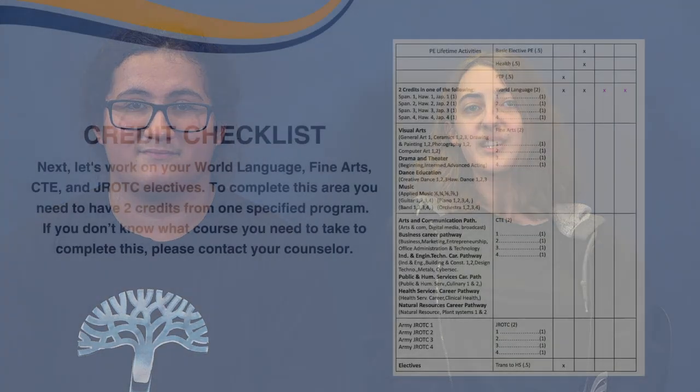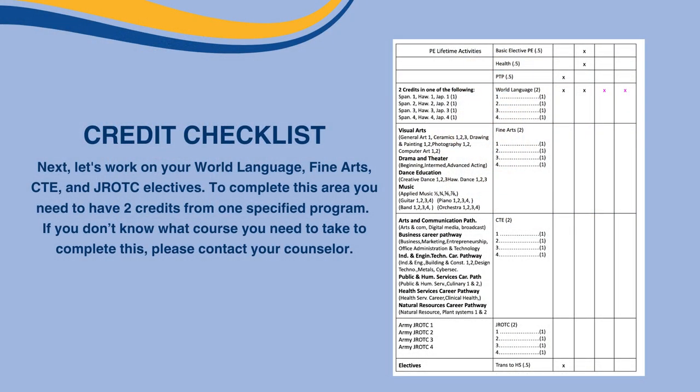Next, let's work on your world language, fine arts, CTE, and JROTC electives. To complete this area, you'll need to have two credits from one specified program. If you don't know what course you need to take to complete this, please contact your counselor.